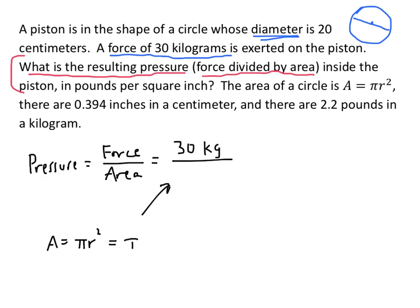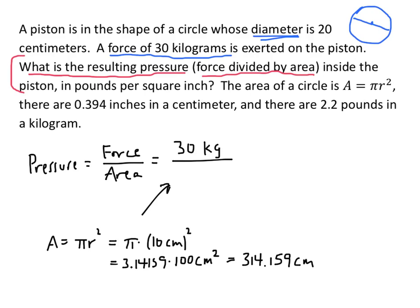So the area is pi times 10 centimeters squared. Pi is 3.14159, and 10 squared is 100. When we square centimeters we get square centimeters. Multiplying it all out, we get 314.159 square centimeters. That's the number that goes on the bottom of our pressure fraction.